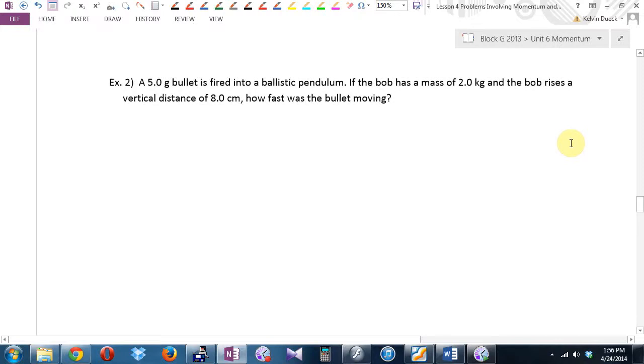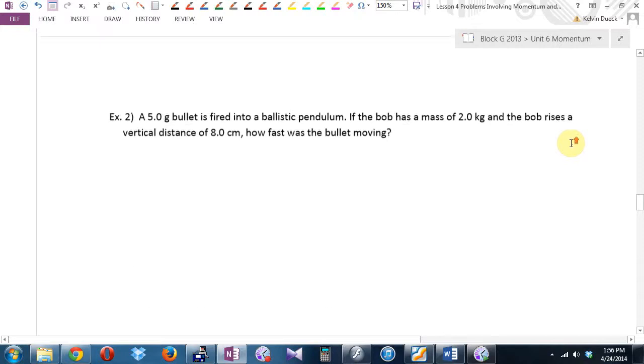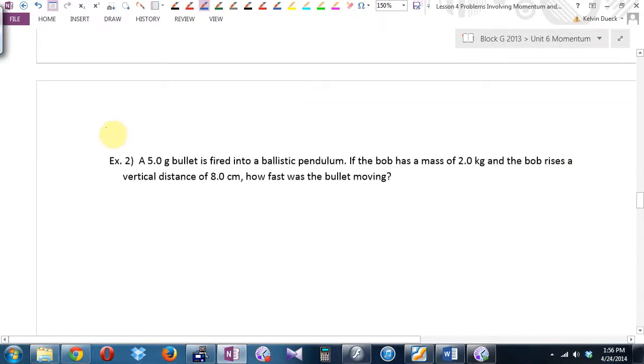Example two. A five-gram bullet is fired into a ballistic pendulum. If the bob has a mass of two kilograms and it rises a vertical distance of eight centimeters, how fast was the bullet moving? So we have kind of bullet. We have a mass hanging from a rope. There's the pendulum bob. And then they are going to swing off together. And they've given us this height. They've said the height is 0.08, eight centimeters. And they want us to find that.